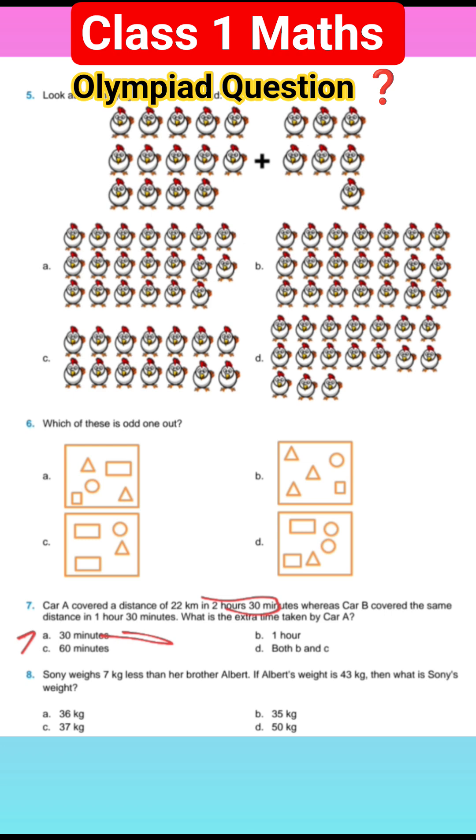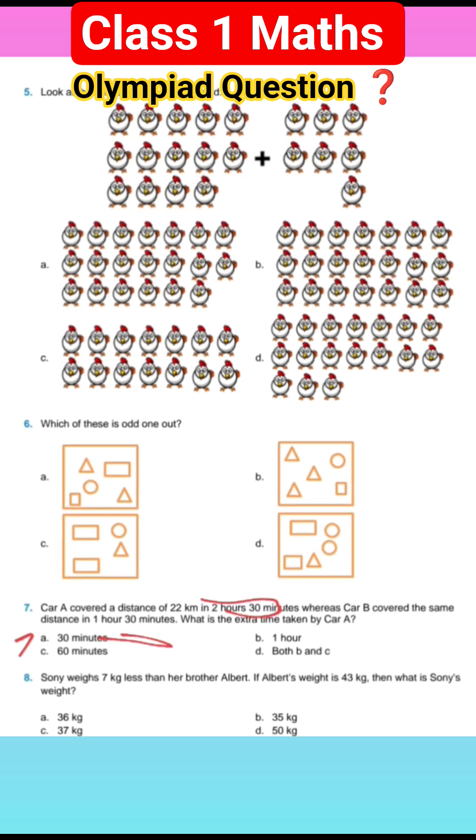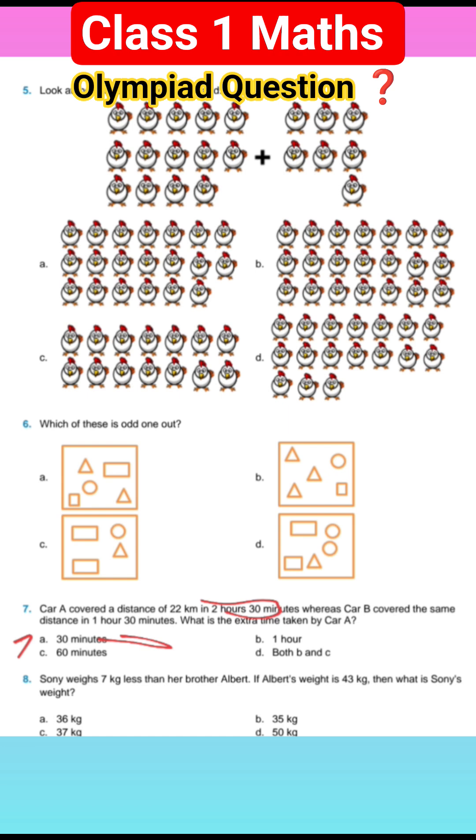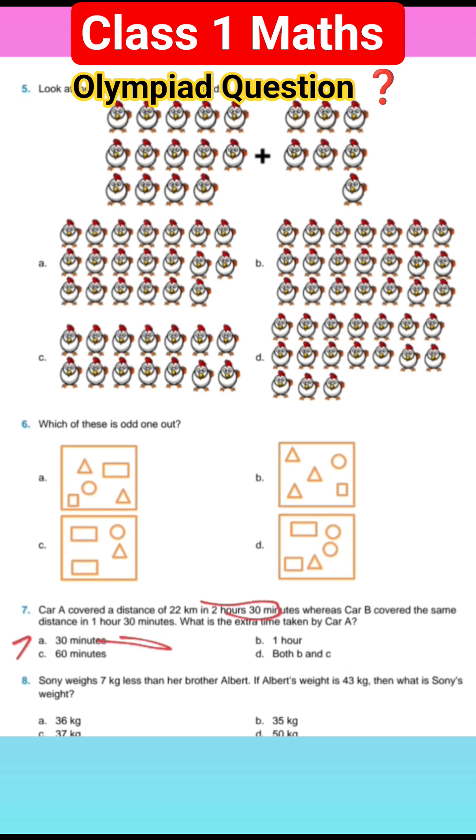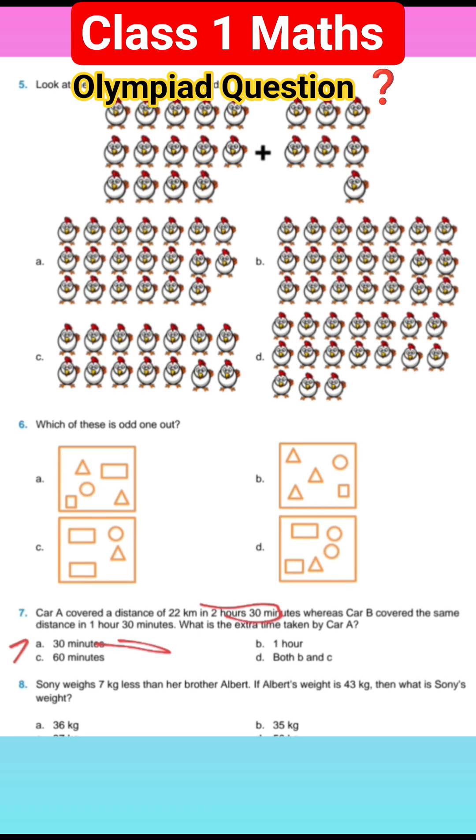You travel 22 kilometers. Car A takes 2 hours 30 minutes and Car B takes 1 hour 30 minutes. So 2 hours 30 minutes minus 1 hour 30 minutes.